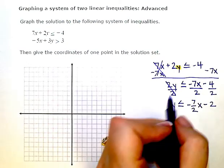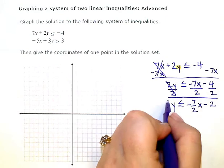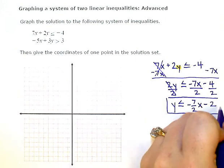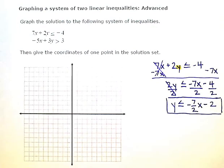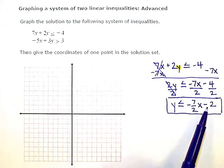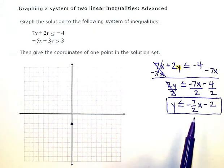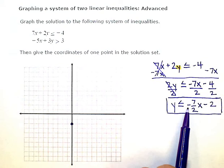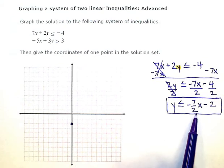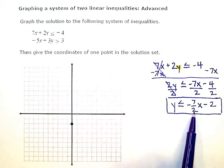So this first inequality is now ready to be graphed. So my y-intercept is negative 2. Put a dot there. Then I'm going to use my slope to just line up a bunch more dots on my graph. So down 7 over 2. Down 7 over 2. To the right 2.